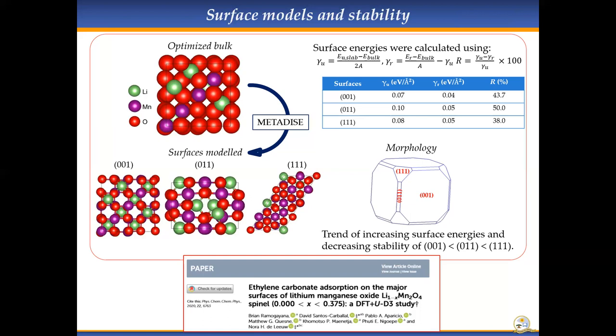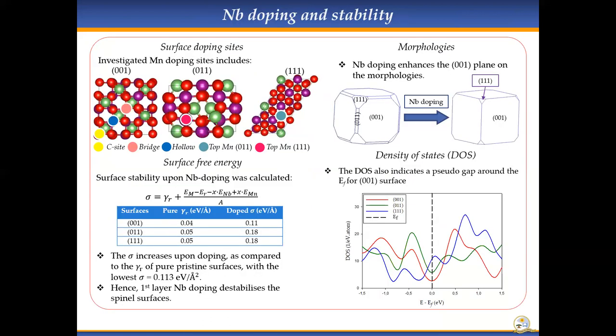We used the calculated surface energies to check the stability trend of the surfaces. We found that the 001 surface dominates the morphology of this lithium manganese oxide, followed by the 011 and then the 111 surfaces. This work was published in 2020 in the paper indicated below.